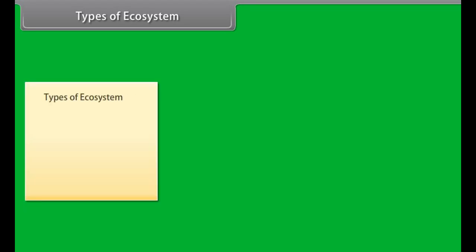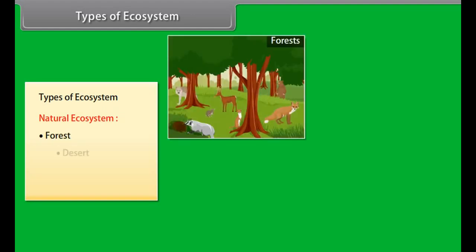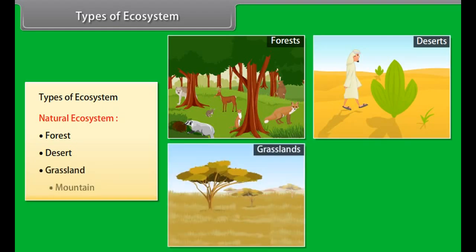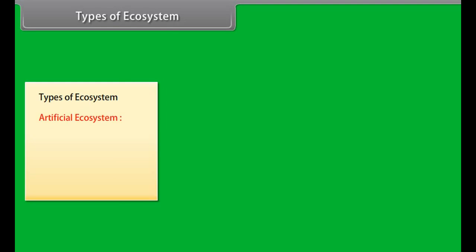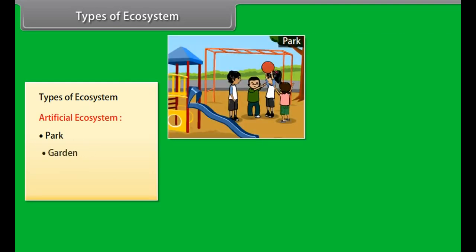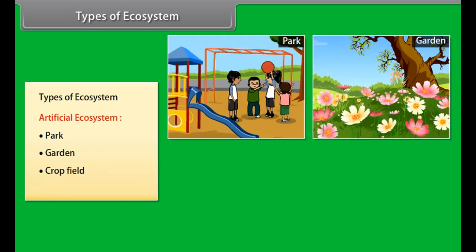Types of ecosystem. There are two different types of ecosystems: 1. Natural ecosystem, which includes forests, deserts, grasslands, mountains, etc. And 2. Artificial ecosystem, which includes parks, gardens, crop fields, zoo, etc.